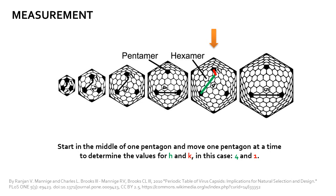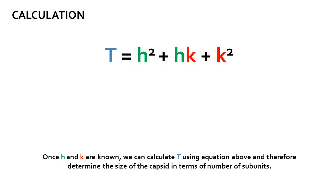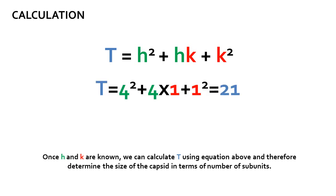It doesn't matter which axis is defined as H and which is defined as K, because the equation used to calculate T treats them equivalently. To calculate T we simply substitute the values for H and K. In this case we get T equals 21.